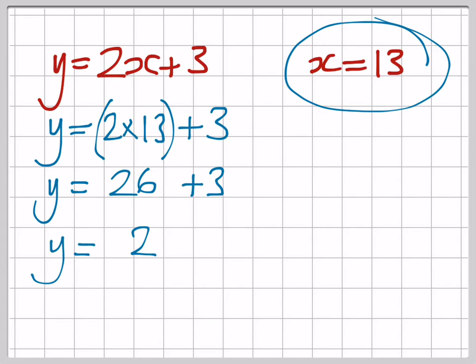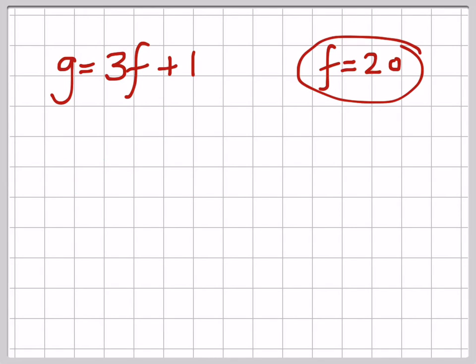Let's try one more. This time g equals 3f plus 1, and you're told this clue that f equals 20. So let's substitute it in. g equals 3 lots of 20, because f is 20, and then you add on the 1.